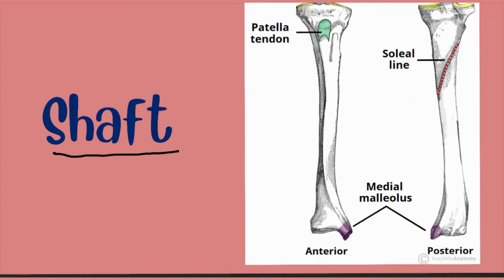The shaft of the tibia is prism-shaped with three borders and three surfaces: anterior, posterior, and lateral. The anterior border is palpable subcutaneously down the anterior surface of the leg as the shin. The proximal aspect of the anterior border is marked by the tibial tuberosity. The posterior surface is marked by a ridge of bone known as the soleal line.